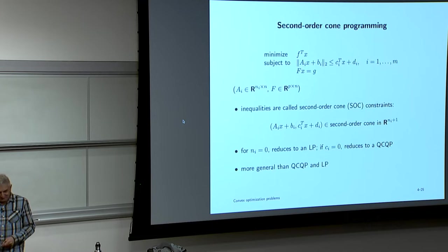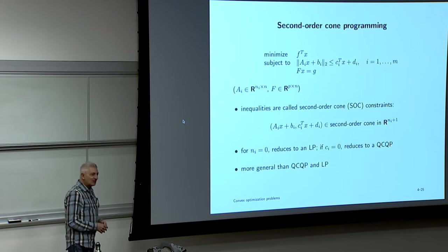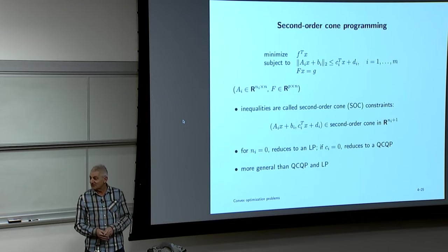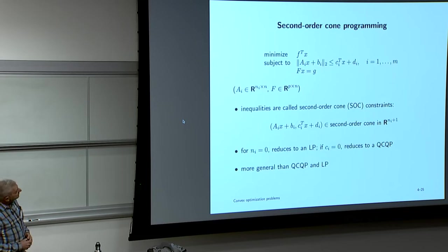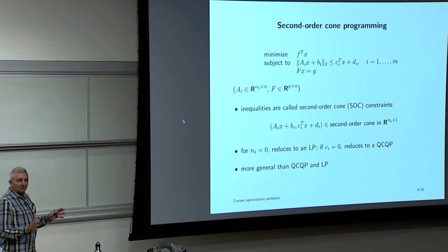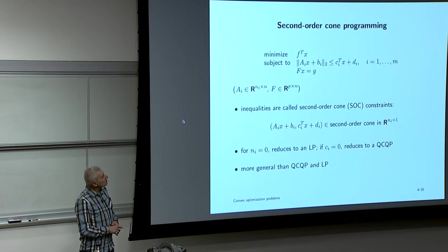When you use CVX or CVXPY and write down functions like quadratic-over-linear or geometric means, they get compiled down to SOCP and solved. This is like the bytecode of convex optimization. Because so many people solve problems reducible to SOCP without knowing it, solver development focuses there, and it all works out well.